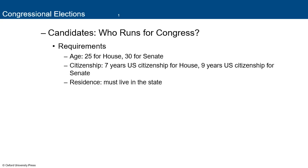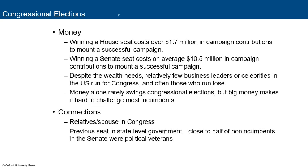Who runs for Congress? Requirements include being 25 years old for the House or 30 for the Senate, having seven years of U.S. citizenship for the House or nine for the Senate, and living in or having a residence in the state you represent. Winning a House seat costs about $1.7 million in campaign contributions; winning a Senate seat costs an average of $10.5 million. Despite the wealth needed, relatively few business leaders or celebrities have run for Congress, and most who do lose — Sonny Bono being one of the most prominent exceptions.